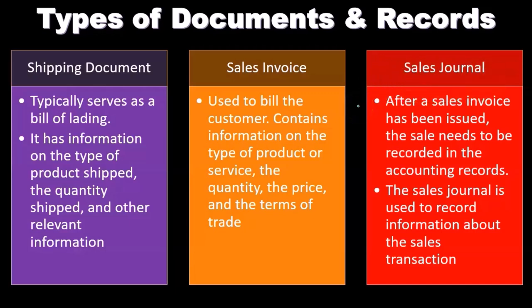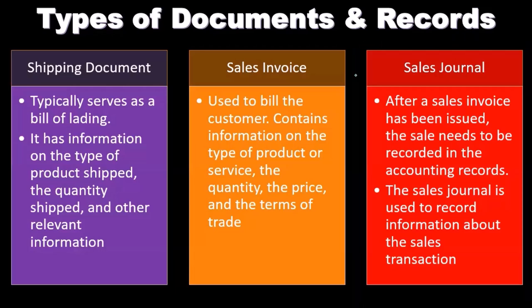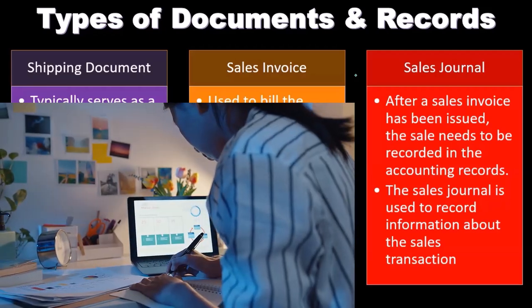After a sales invoice has been issued, the sales need to be recorded in the accounting records. The sales journal is used to record information about the sales transactions. The sales journal is a specialized journal that's just going to show the sales type of reports. This might be a report that we'll have to print out if we're using accounting software.